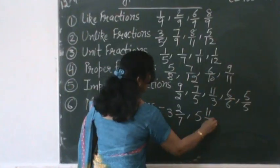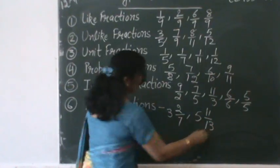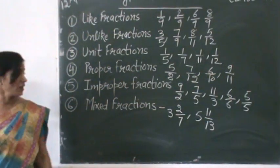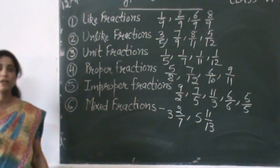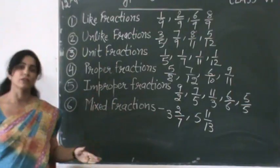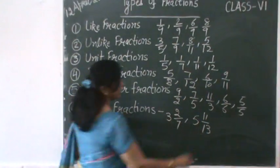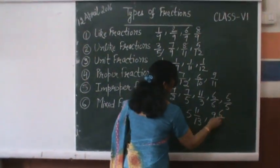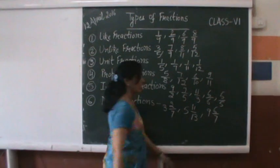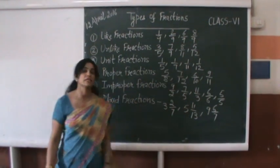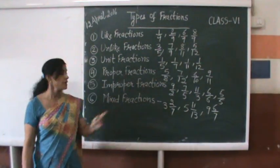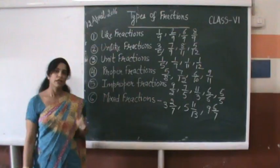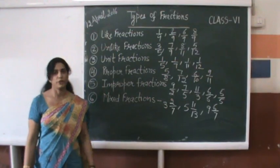5 and 11 by 13, where 5 is a whole number and 11 by 13 is a proper fraction. 9 and 6 by 7, where 9 is a whole number and 6 by 7 is a proper fraction. That's all for today.